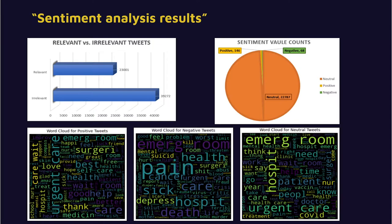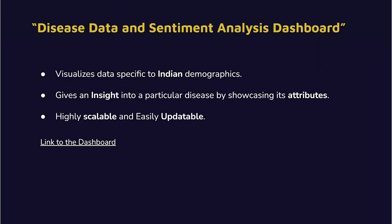The images below show the word cloud for all three categories: positive tweets, negative tweets, and neutral tweets. Regarding the disease data and sentiment analysis, we also built a dashboard so that other users can visualize this data. One advantage is that it can be scaled based on the amount of data, and there are different attributes allowing users to deep dive into the analysis.